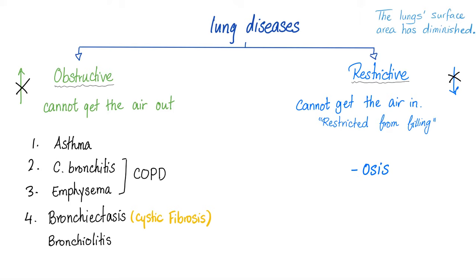Restrictive lung disease includes any disease that ends in '-osis', such as lung fibrosis, asbestosis, silicosis, pneumoconiosis, etc. Another example of restrictive lung disease is if your lung surface area has diminished — for example, a patient who removed one of his two lungs. That's a diminished total surface area available for gas exchange, so the lung is restricted from filling.